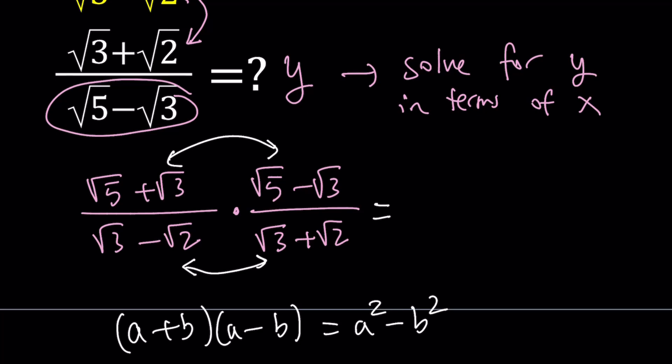In that case, we have root 5 squared and root 3 squared, so this is going to be 5 minus 3, and the bottom is going to be 3 minus 2. I just wanted to show you how it's applied. This becomes 2 over 1, which is 2.